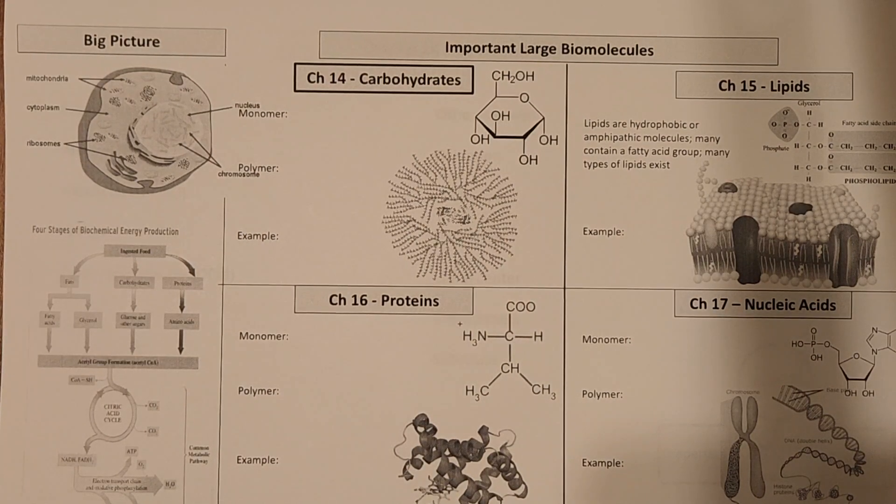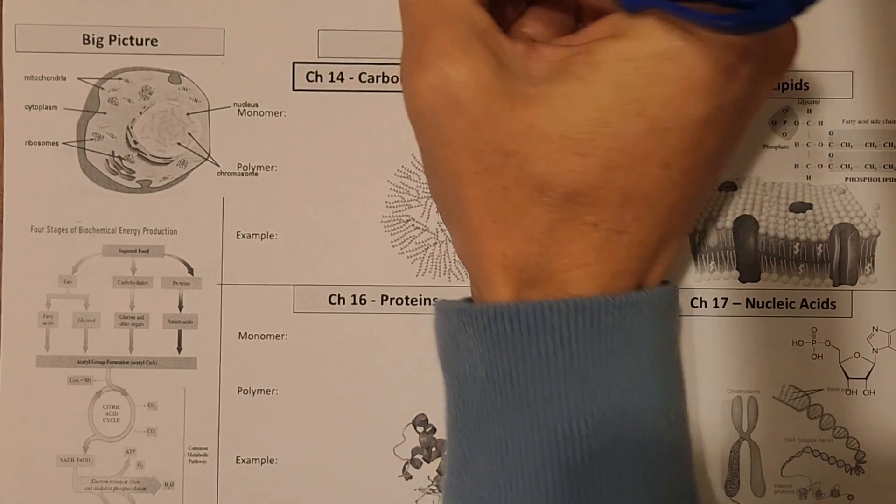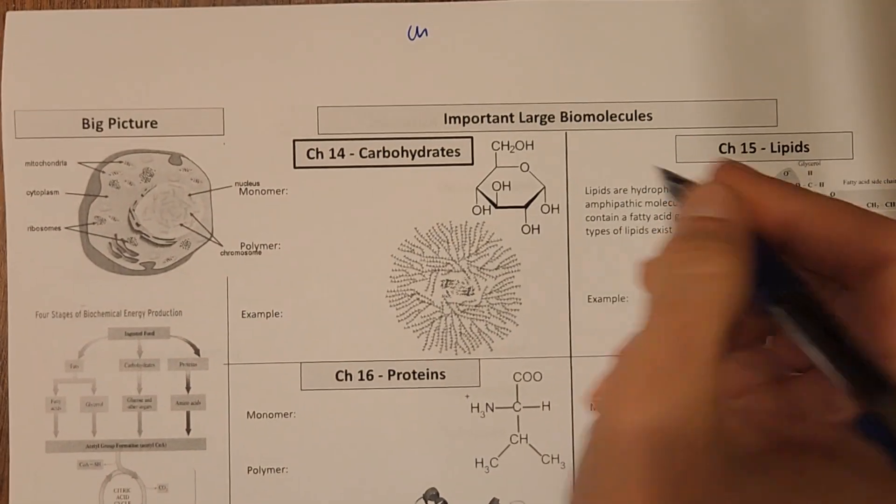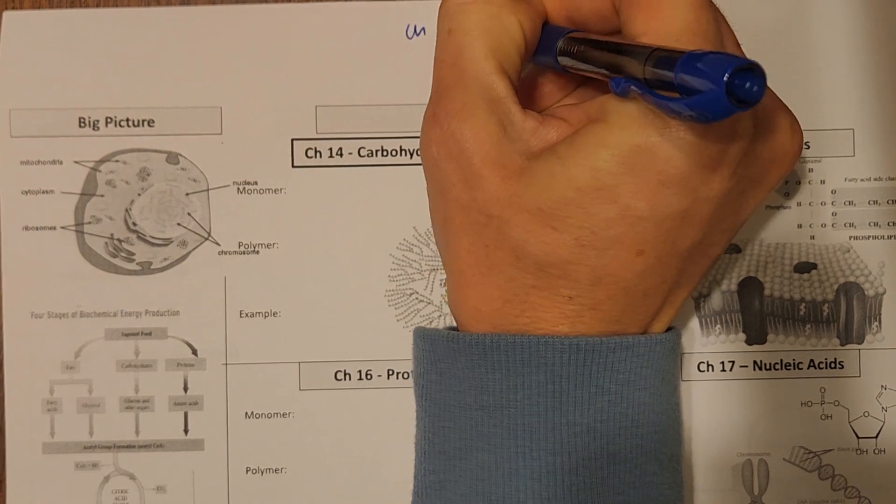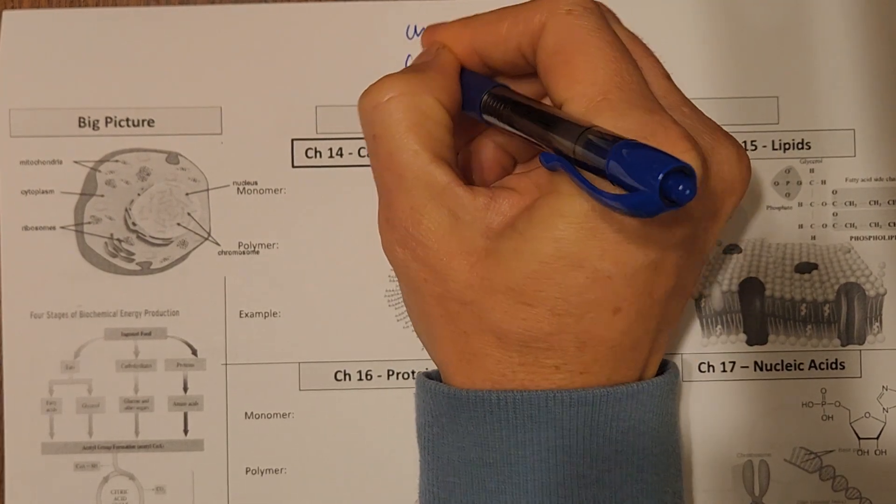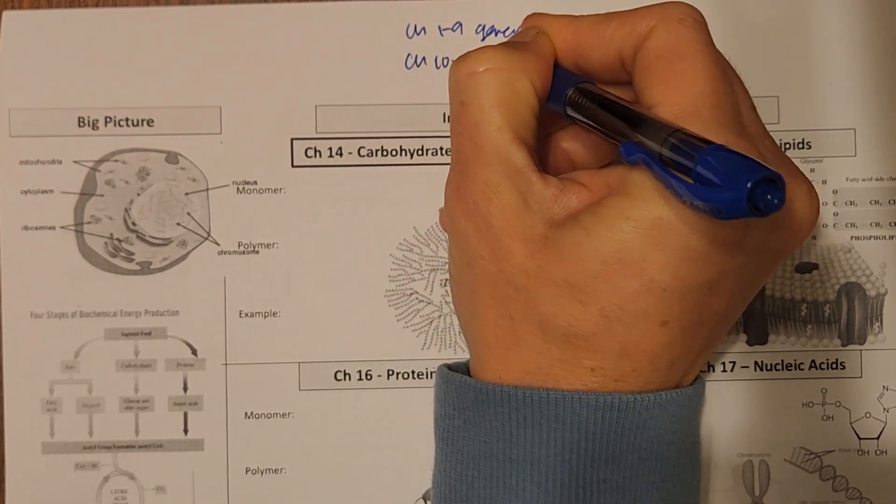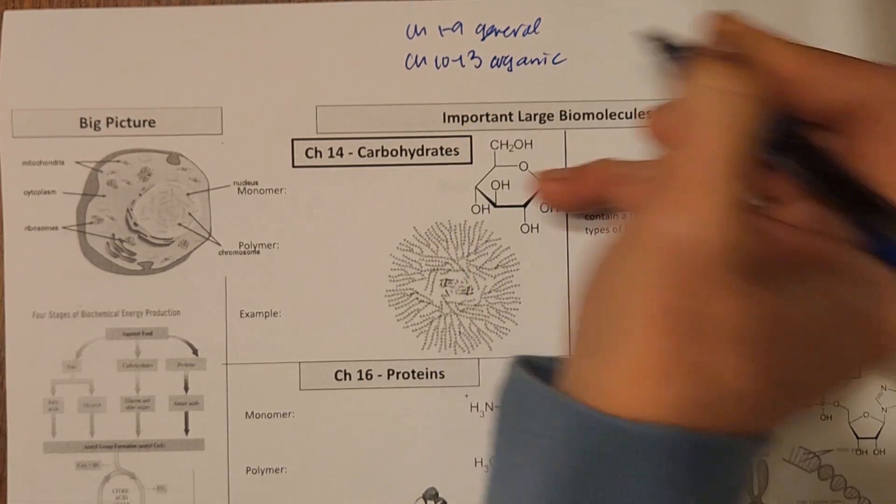Hi everyone. So we are entering our third part of the semester. First we did chapters 1 through 9, which was general chemistry. Then we did chapters 10 through 13, which was organic chemistry.